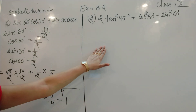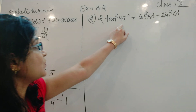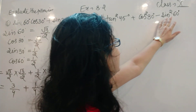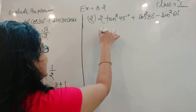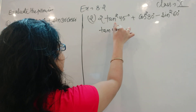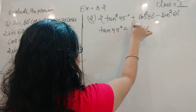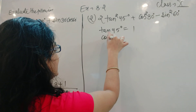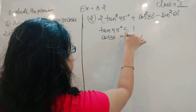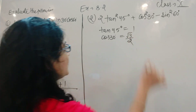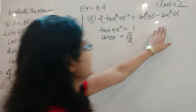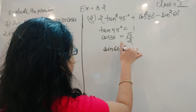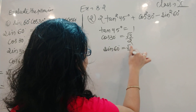Now we discuss the second one: 2 tan² 45° + cos² 30° − sin² 60°. We know that tan 45° = 1, cos 30° = √3/2, and sin 60° = √3/2.